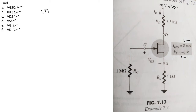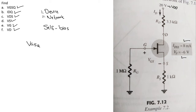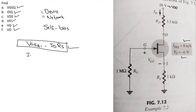We will use the graphical approach. To do so we need to plot two types of characteristics: the transfer (device) characteristic curve and the network characteristic plot. For this self-bias configuration, the network plot equation is VGSQ = -ID · RS. We can plot this equation using two points. For ID = 0, VGS = 0.